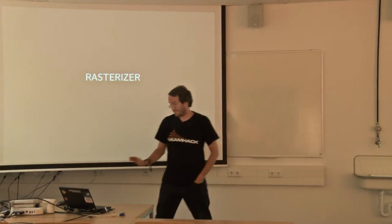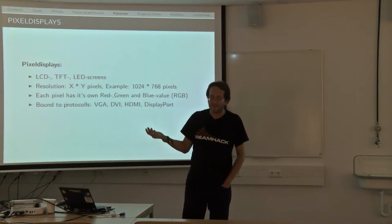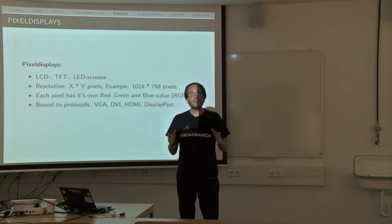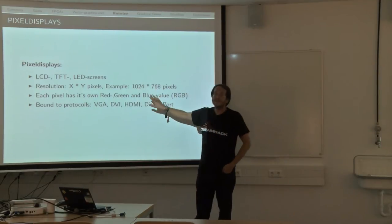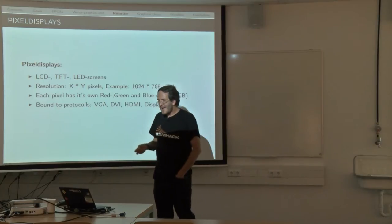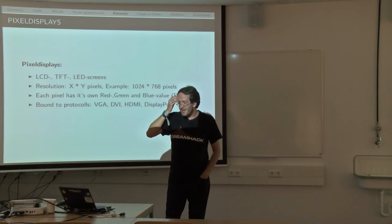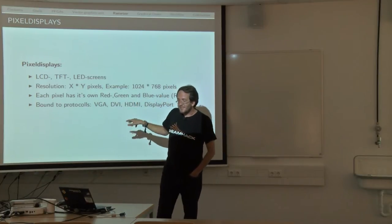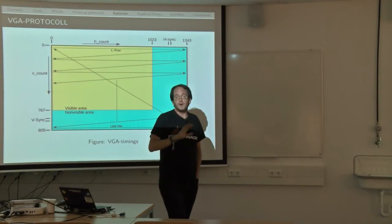Let's move to the Rasterizer. The Rasterizer uses a pixel display — the kind we all know from our phones, laptops, and desktop monitors. They are all pixel-based and have a resolution. The Rasterizer I built works with a resolution of 1024 by 768 pixels. Each pixel has its own RGB value. The data gets to the display via a protocol — I'm using the VGA interface, though there could also be DVI, HDMI, or DisplayPort, each with its own protocol.